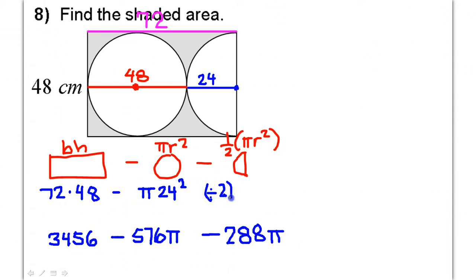All right, I'm just making a note that we divided by 2 on that. Okay. You know what? The 576 pi and the 288 pi, those are like terms. So, we can go ahead and put those together.